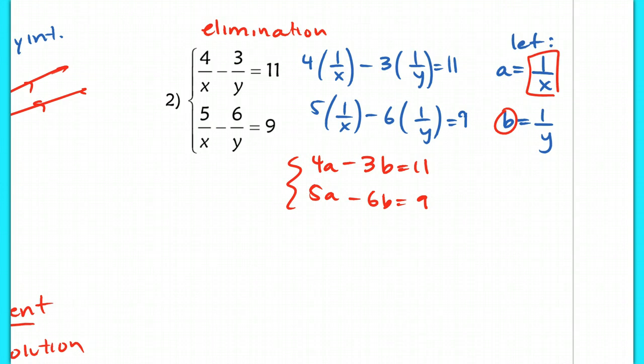And to use elimination here, let's eliminate the b's first. I'm just going to eliminate this by multiplying by a negative 2 on the top line. Now after I do that, I'm left with negative 3a equaling negative 13. So a equals 13 thirds.